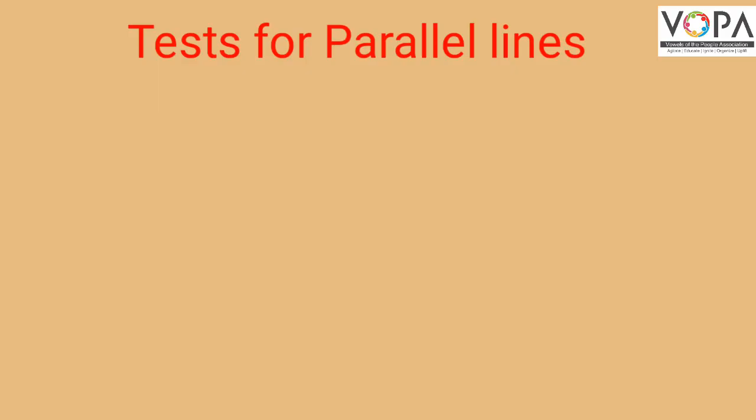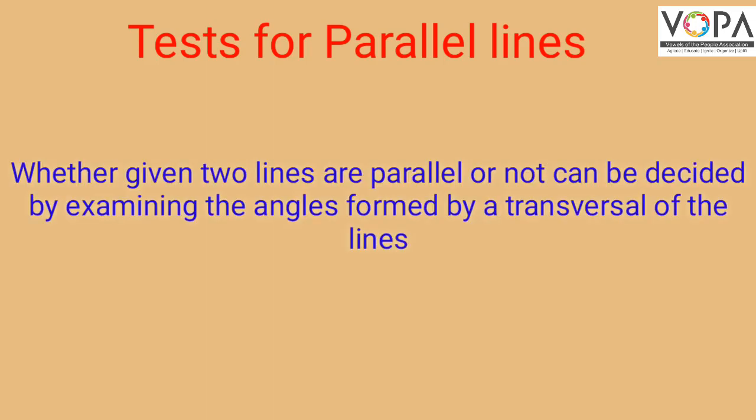Tests for parallel lines: whether two given lines are parallel or not can be decided by examining the angles formed by a transversal of those lines. These are called tests for parallel lines.